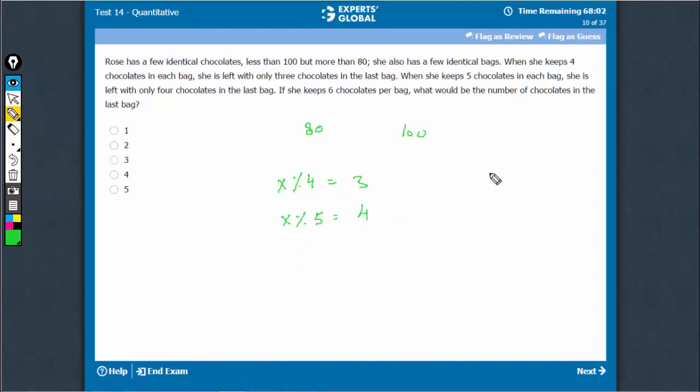So a number that leaves remainder 3 with 4. So when divided by 4, the remainder is 3. Then divided by 5, the remainder is 4.